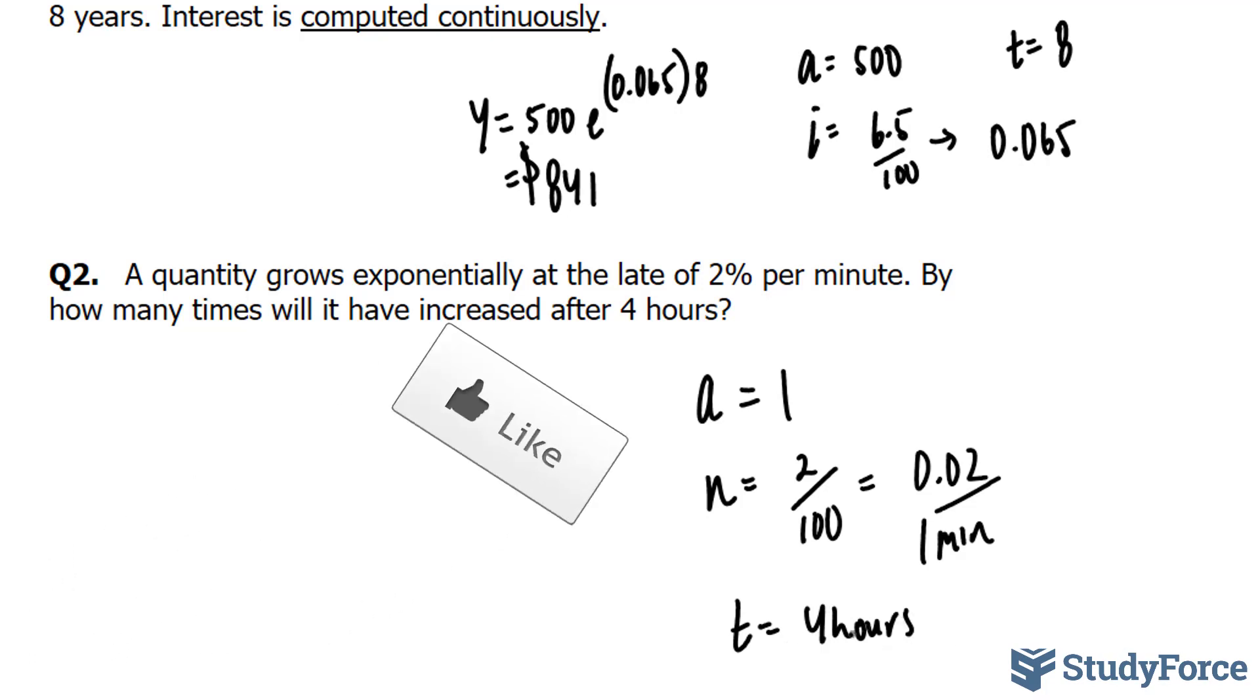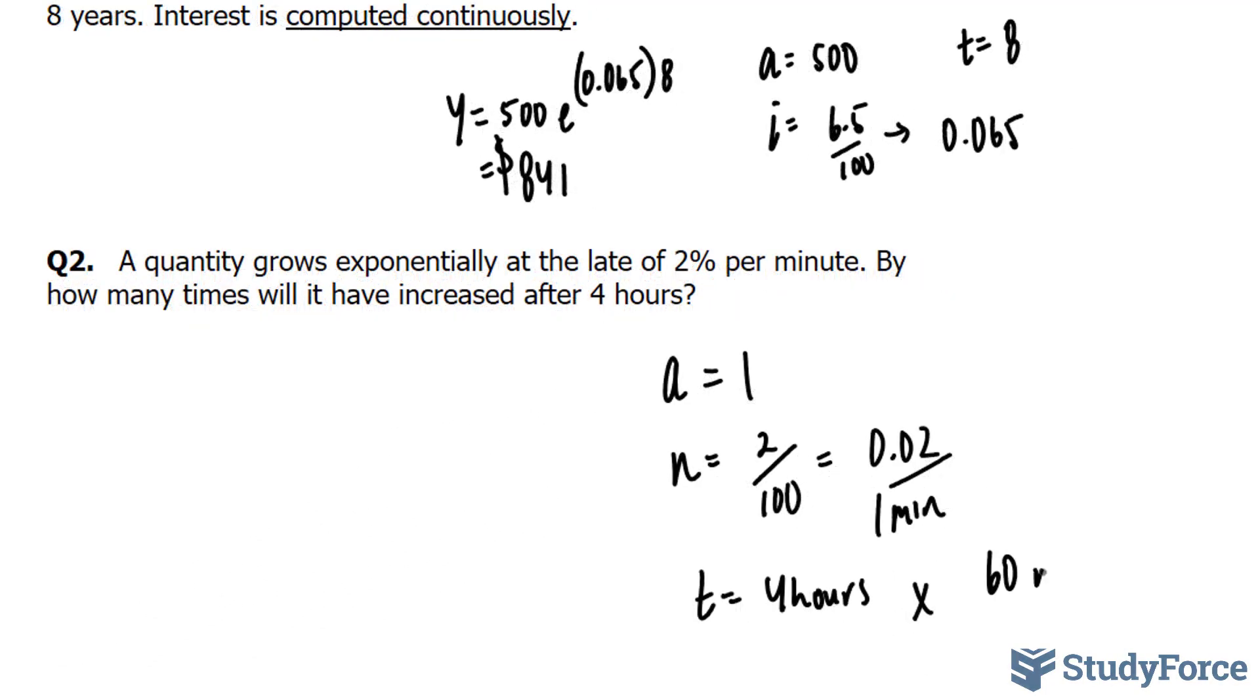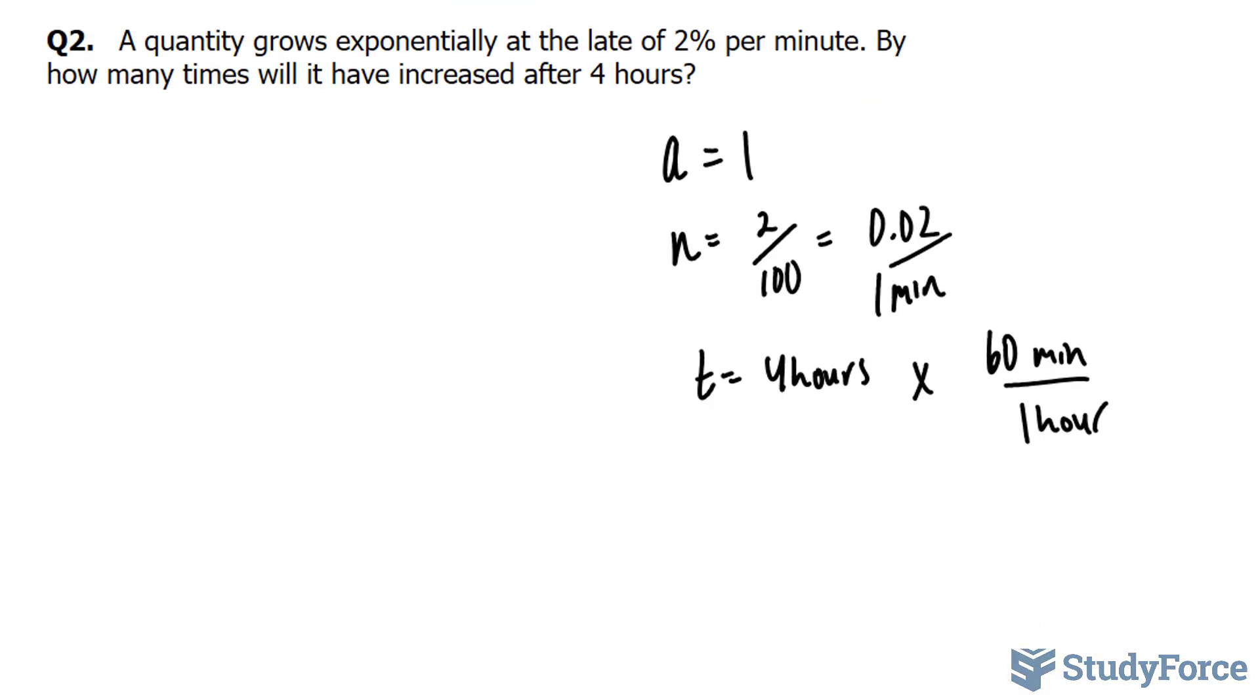So what we have to do is change 4 hours so that it corresponds to the rate. Let's multiply this by 60 minutes over 1 hour. What this will do is we'll cancel out the hours, giving us simply minutes. So 4 times 60 is 240 minutes.